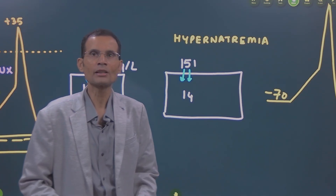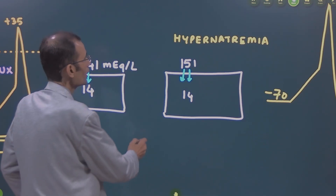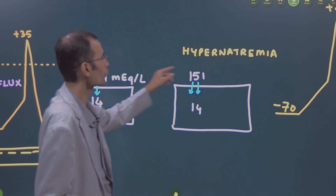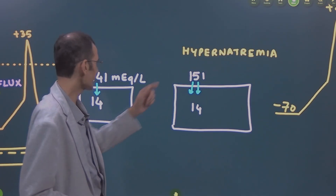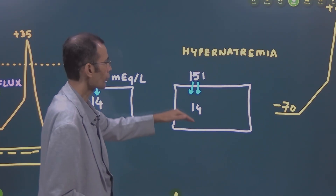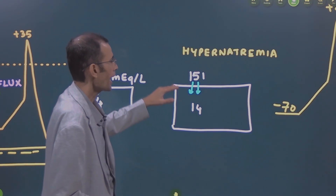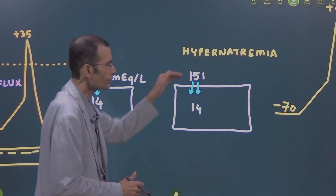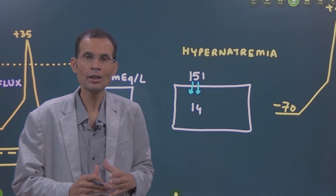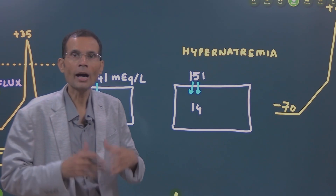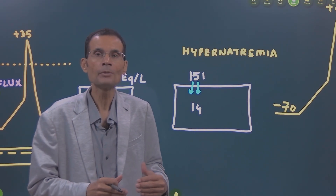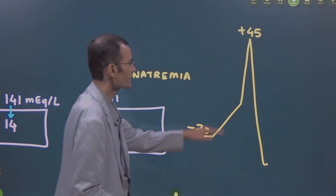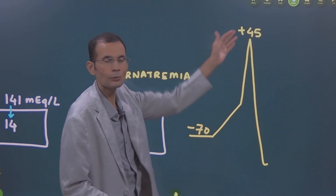Now consider another set of conditions — conditions have changed. Let's say there is a condition called hypernatremia, increased serum sodium: 151 on the outside instead of 141, and 14 on the inside. It means at threshold, there is a wider concentration gradient for sodium. So when the threshold is reached, there will be a massive influx of sodium. But this time, because of a wider concentration gradient, more sodium will come in — more positive charges at threshold. That means the amplitude will increase.